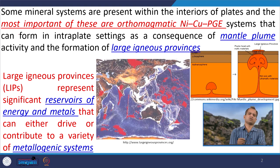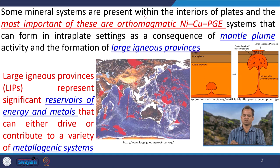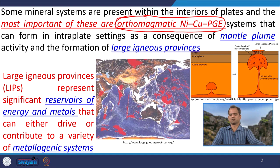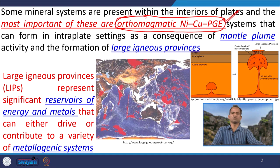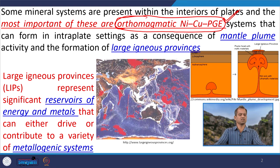Particularly when we are talking about this mantle plume or continental interior magmatism, this is the orthomagmatic system. Nickel, copper, and platinum group elements are the most dominant mineralization or metallogenesis in this type of system.